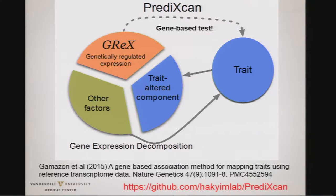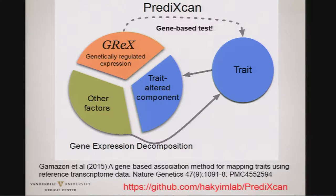While overall gene expression depends on both short-term environment, like what you ate for breakfast, and longer-term environment, like whether you exercise regularly and smoke, and of course over a lifetime those things combine and you develop diseases that feed back on what we measure as gene expression. So there's a trait-altered component that makes direct comparison of measured gene expression to disease very difficult for inferring causality.